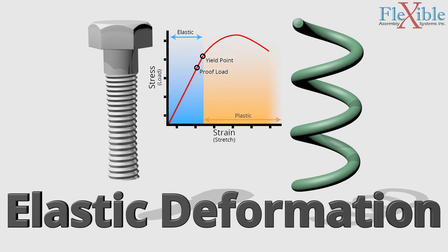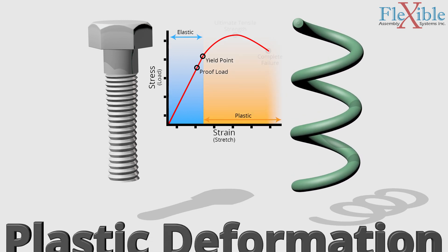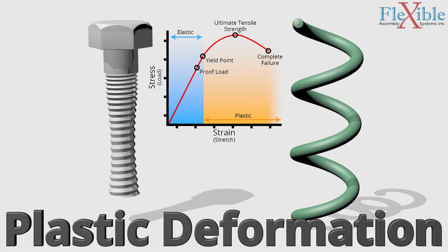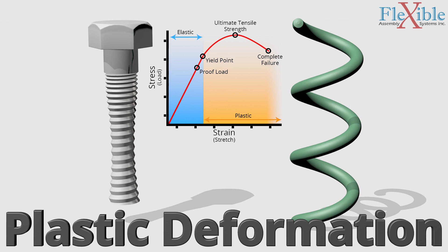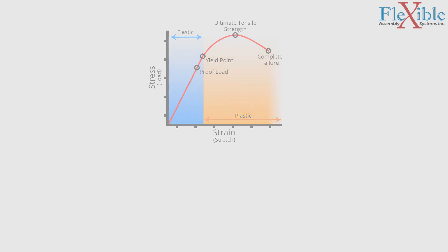Beyond the yield point the fastener enters the plastic deformation range. At peak stress and strain is the ultimate tensile strength. And beyond that is complete failure when the fastener fractures.